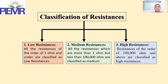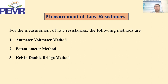We have three types of resistance: low resistance, medium resistance, and high resistance. Low resistance has a value less than 1 ohm. Medium resistance has a value between 1 ohm and 100 kilo-ohm — this is the range most commonly encountered in day-to-day life. High resistance is 100 kilo-ohm and above, and can be measured by the megohm or loss-of-charge method, which will be studied in a dedicated lecture.